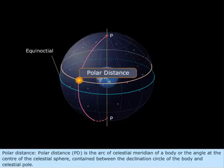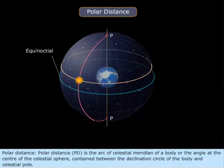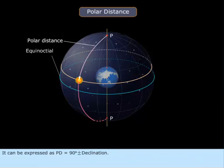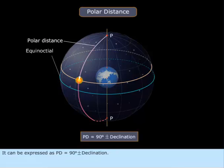Polar Distance. Polar Distance, or PD, is the arc of the celestial meridian of a body, or the angle at the center of the celestial sphere, contained between the declination circle of the body and the celestial pole. It can be expressed as PD equals 90 degrees plus or minus declination.